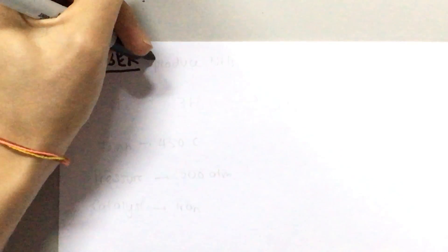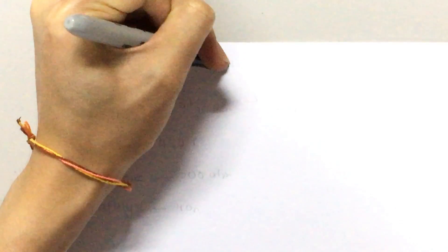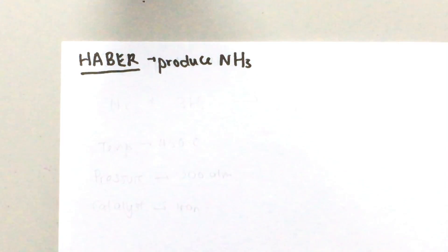Morning everyone, today we'll be talking about the Haber process which is the process used to produce ammonia gas. Ammonia is very useful because it can be used mainly as fertilizers. Let's talk about how ammonia is produced.